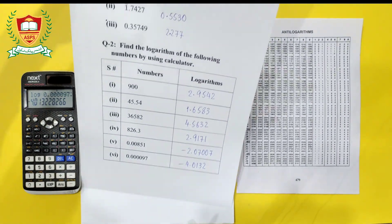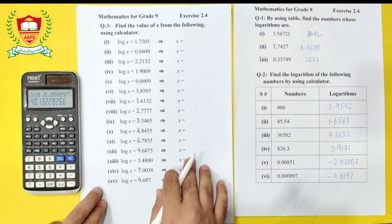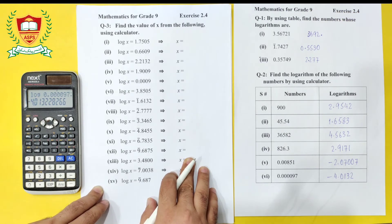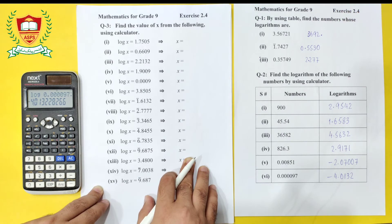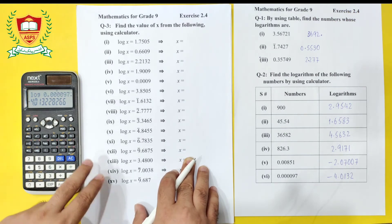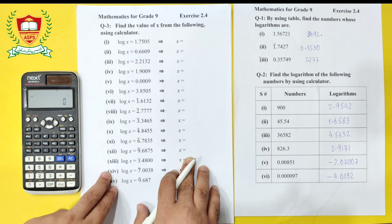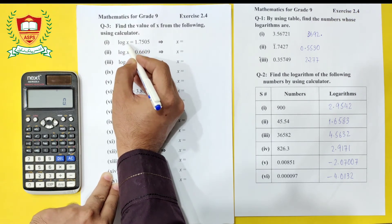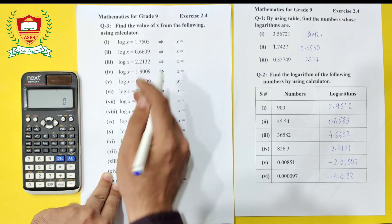Question 3 asks us to find the value of x using a calculator. Without a scientific calculator, log values cannot be found on a simple calculator. Previously, the board exam did not allow scientific calculators, but now, based on this exercise, scientific calculators should be allowed. We identify that anti-log is needed: log x = 1.7505, so x = anti-log(1.7505).